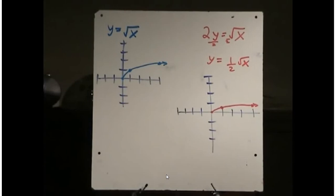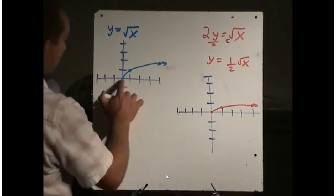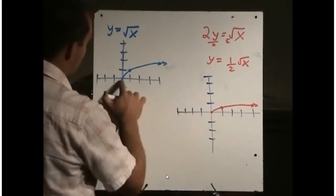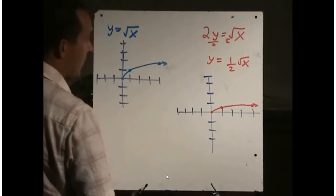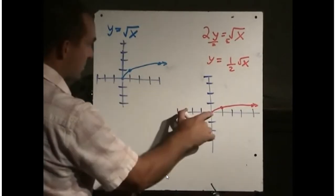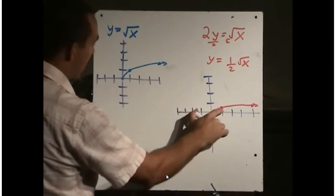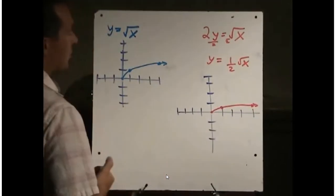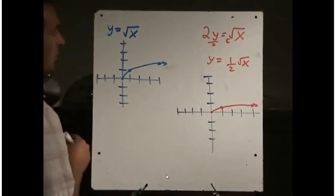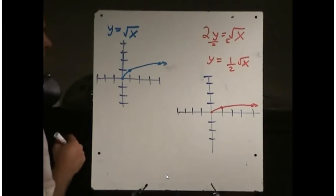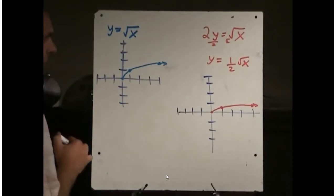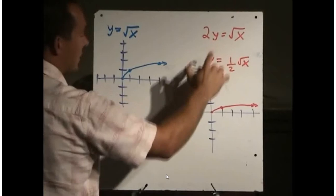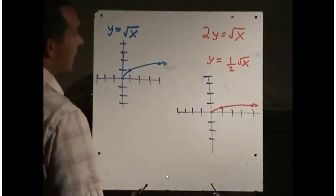Here is the result. We still have the same x values at 0, 1, and 4, but our y values have changed — they're one-half of what they used to be. Half of 0 is still 0, but half of 1 is one-half, and half of 2 is 1. Just like replacing x with 2x gave a horizontal compression by a factor of one-half, replacing y with 2y gives a vertical compression by a factor of one-half.